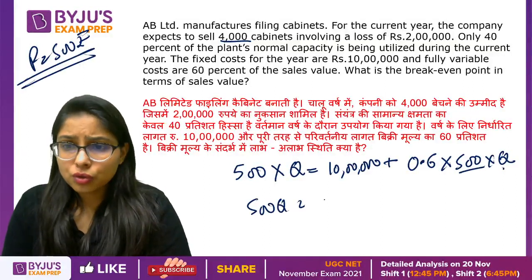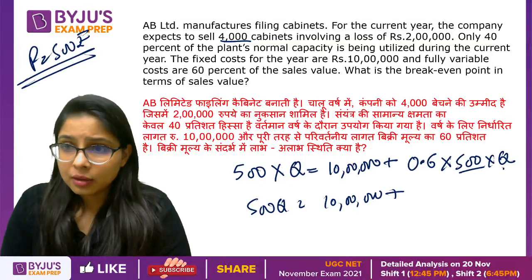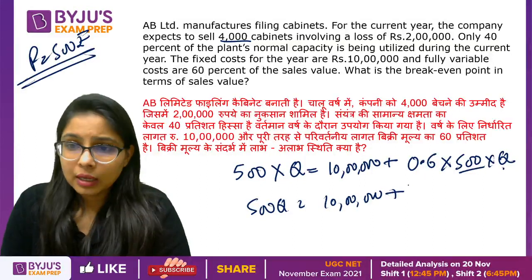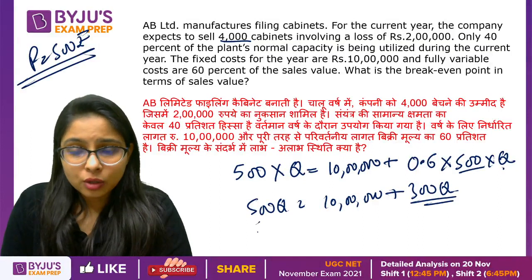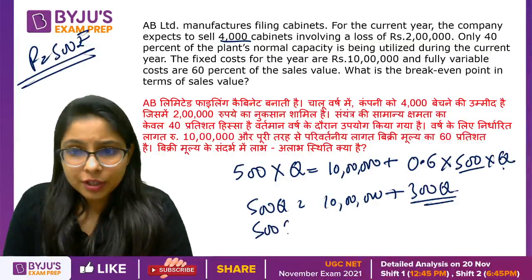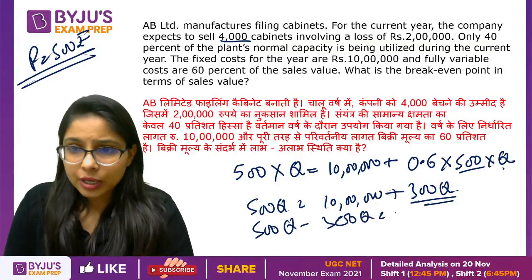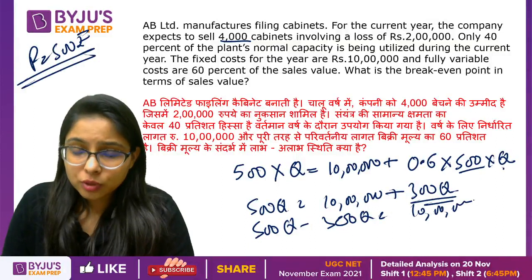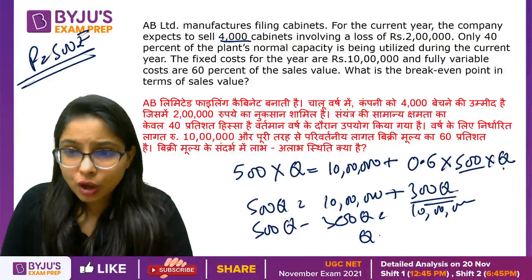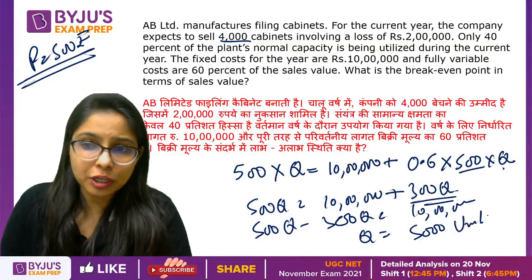When we solve this equation: 10 lakh plus 300Q — so 500Q minus 300Q equals 10 lakh, which gives us 200Q equals 10 lakh, meaning Q equals 5,000 units. Therefore, 25 lakh is your correct answer.